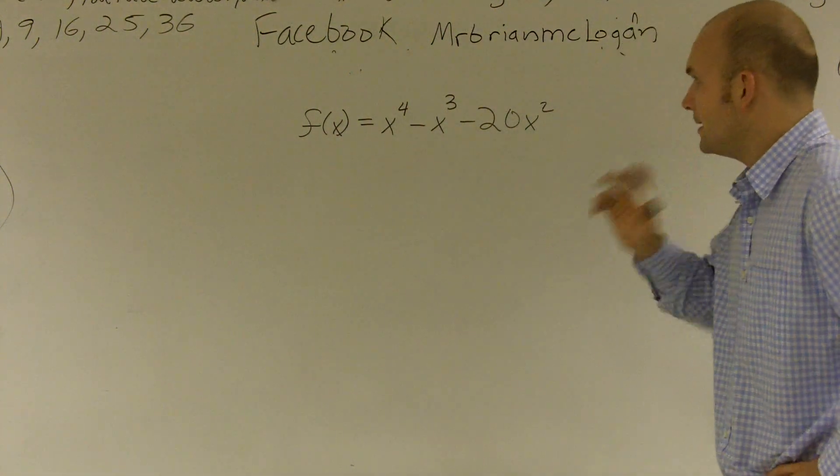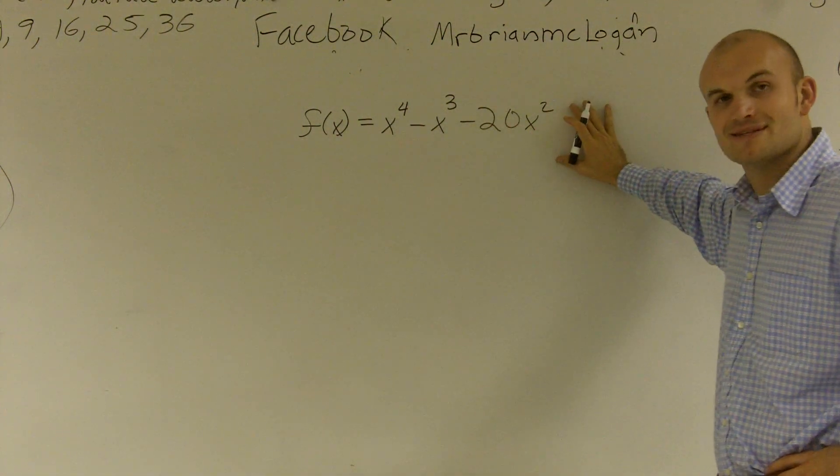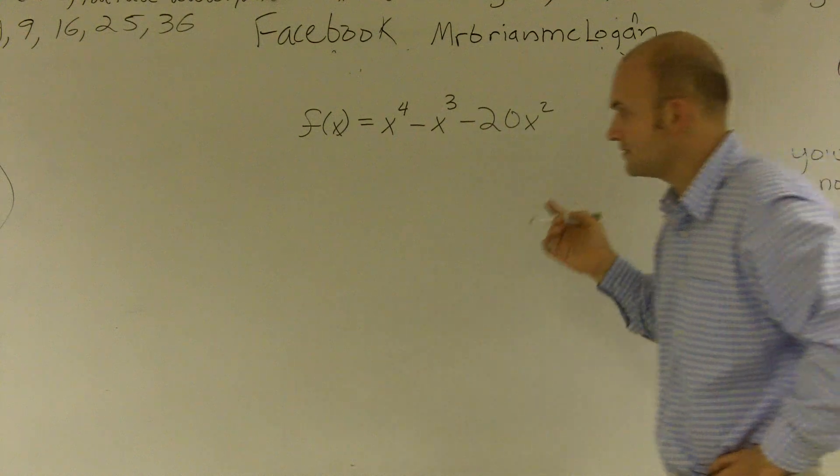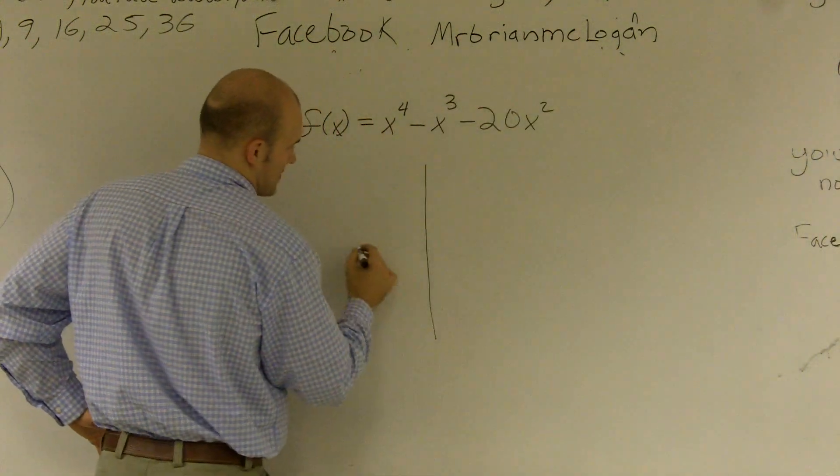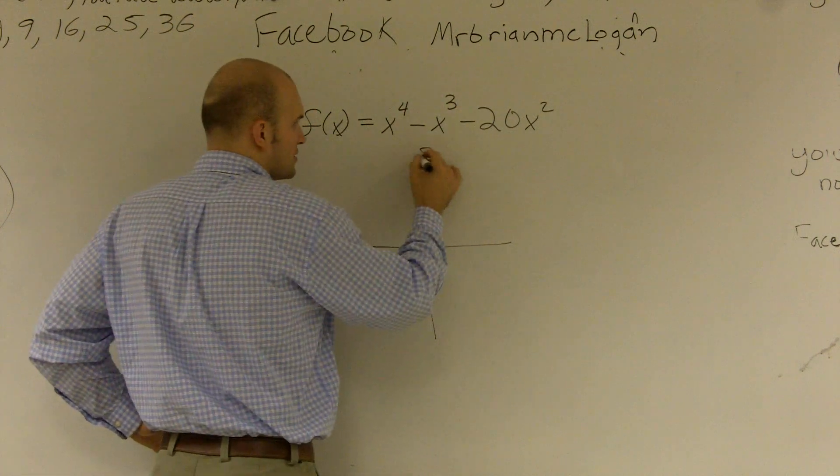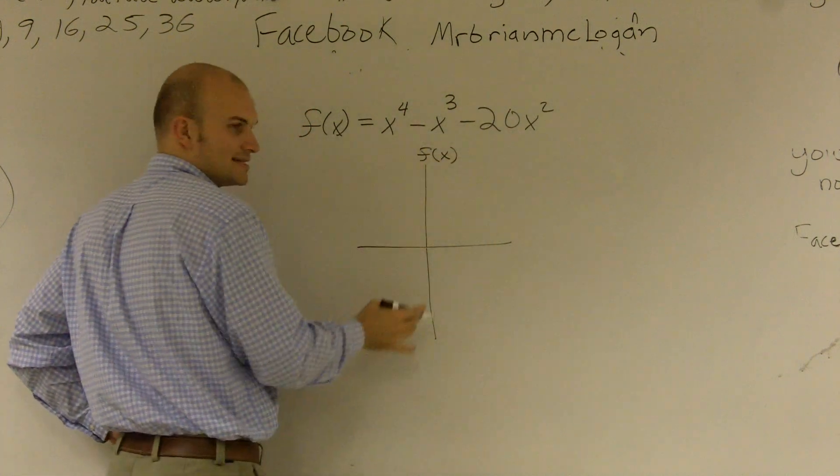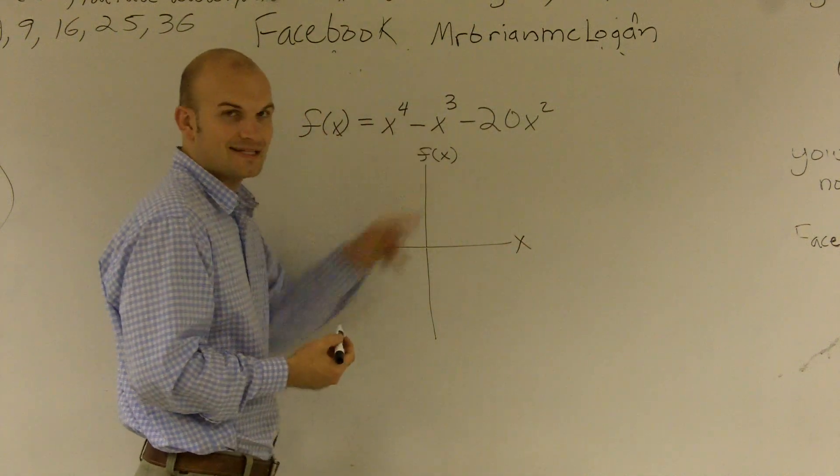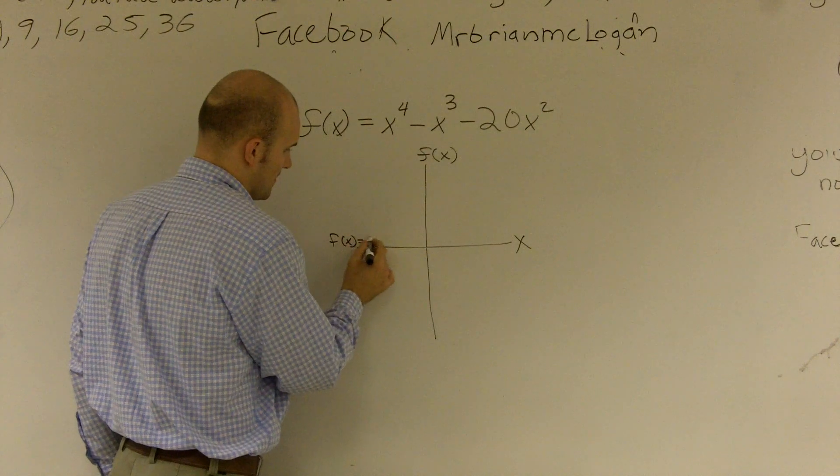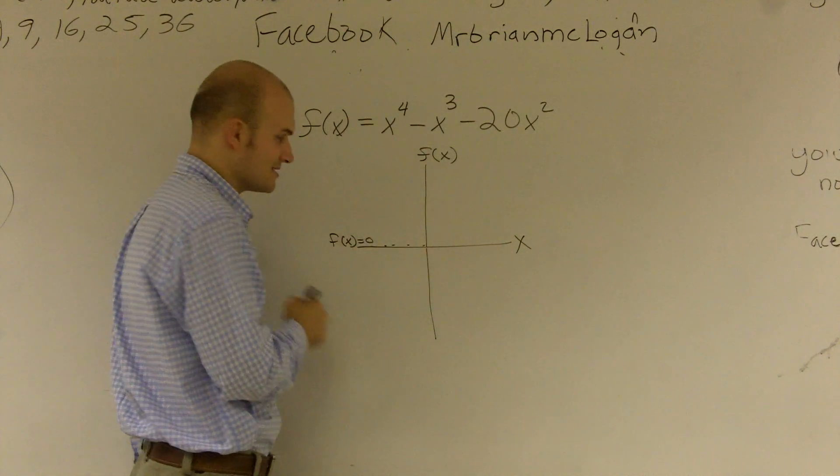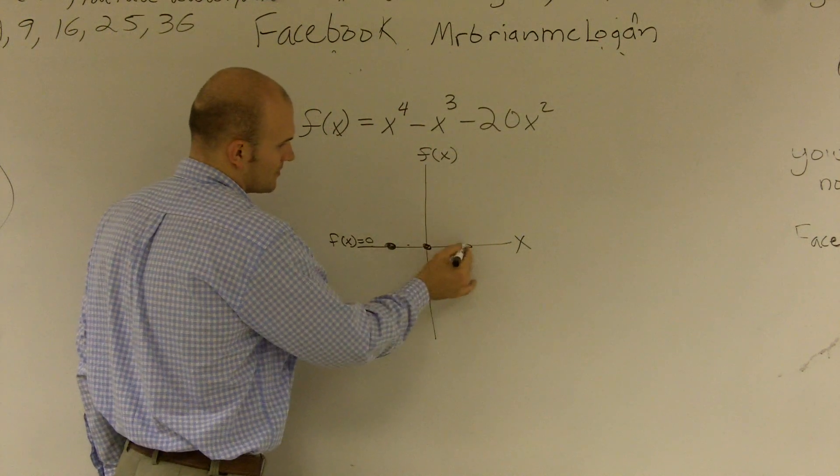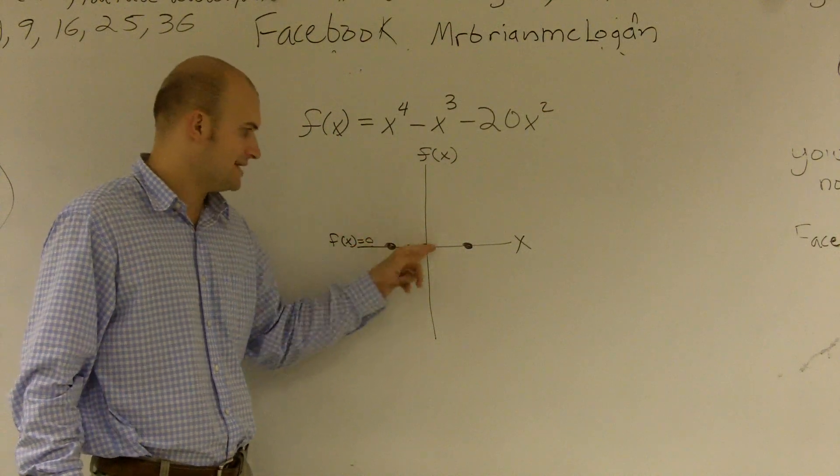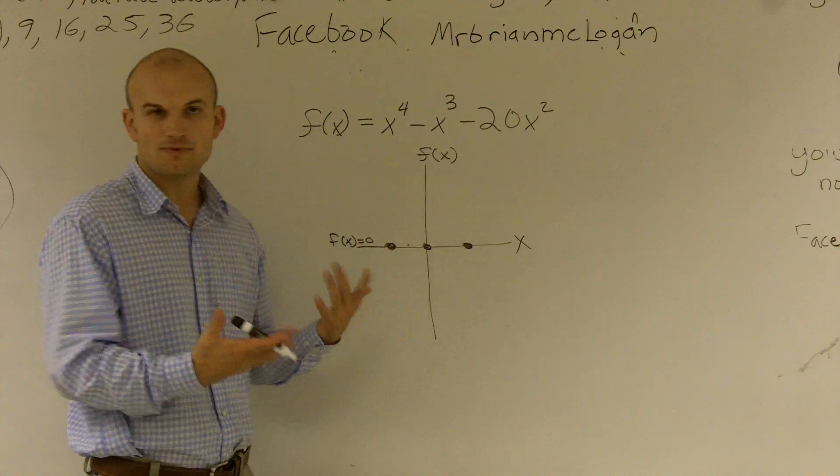So first thing we want to do is when we're thinking about zeros, we need to remember what are the zeros of a function. The zeros of a function means when f(x) is equal to 0. If you think about your y-axis as your values of f(x) and your x-axis as your values of x, when f(x) equals 0 is this line right here, your x-axis. That's where we get the name zeros.